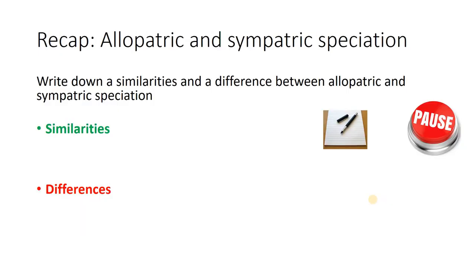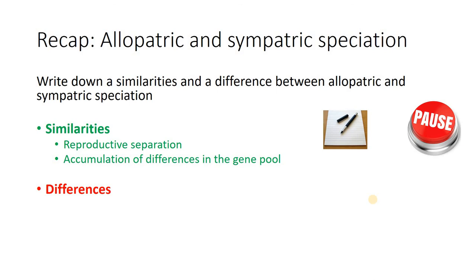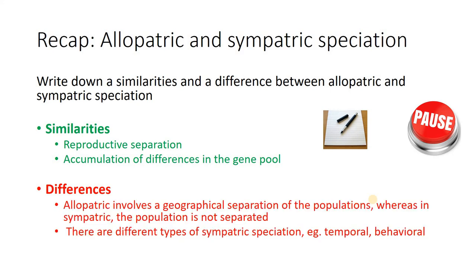So that's one example. Now another time to pause — think about similarities and differences between the two types of speciation: allopatric and sympatric. Just jot down a few words. Similarities: they both involve some sort of reproductive separation — either physically or behaviourally — and they both will eventually end up with genetic drift and differences in gene pool that lead to speciation. Differences: geographic separation in allopatric, whereas behavioural separation in sympatric — they're not actually physically separated from each other. And you could possibly talk about different types of sympatric speciation.